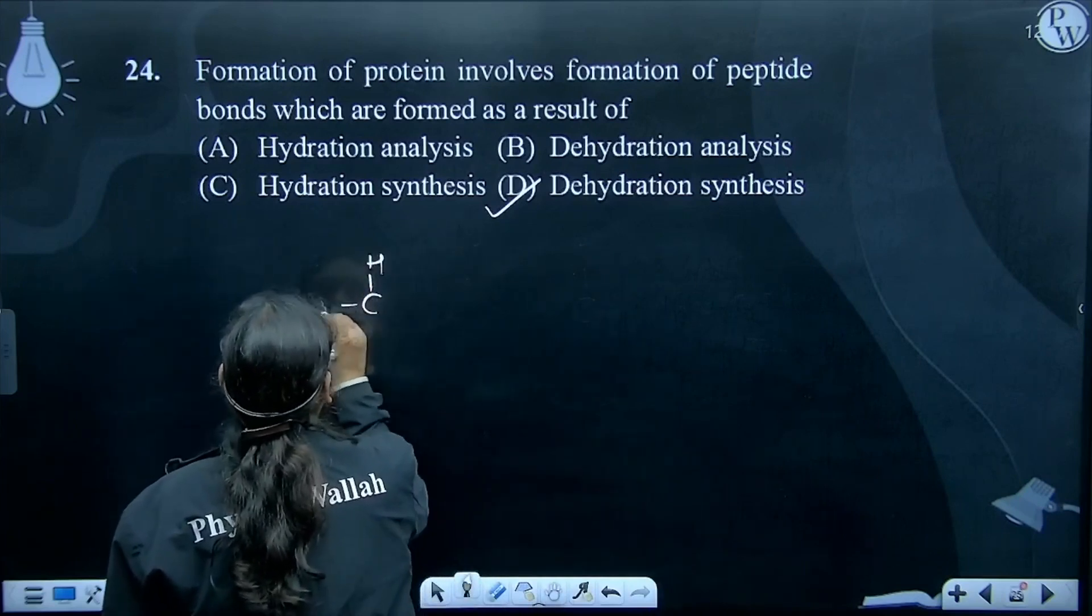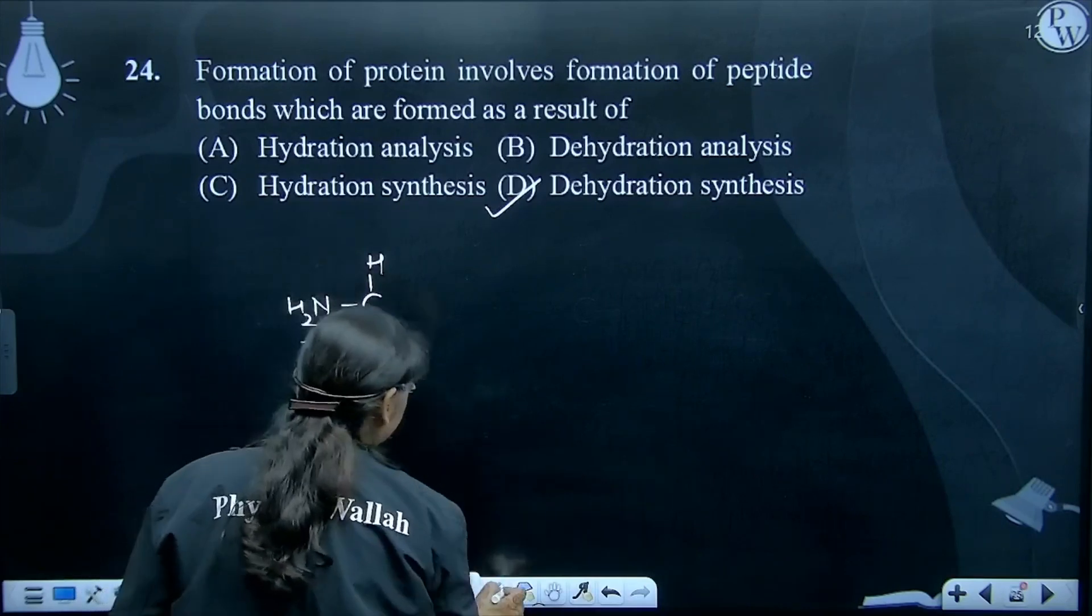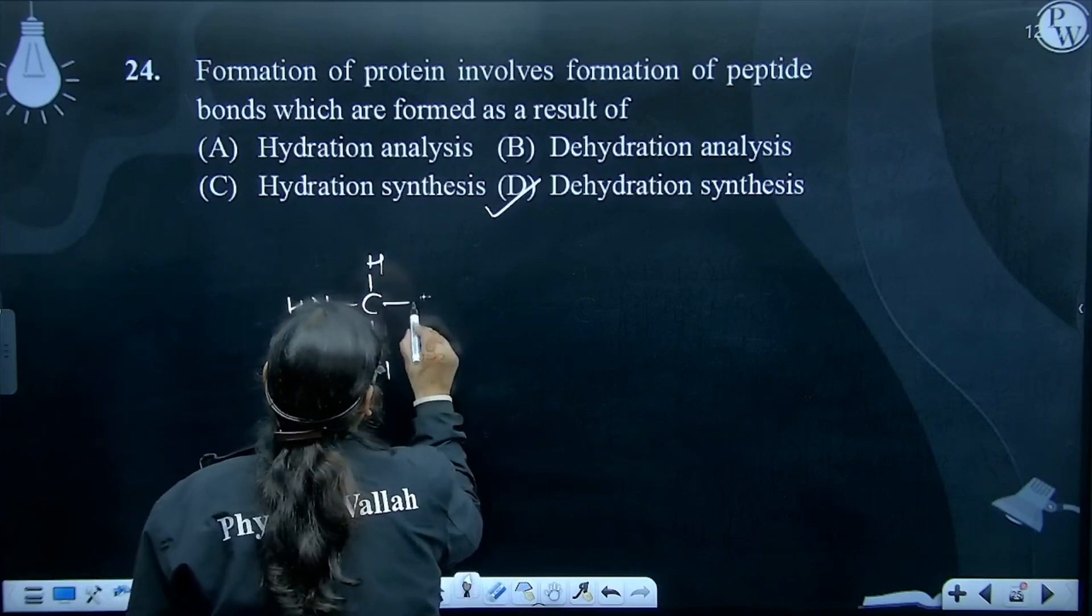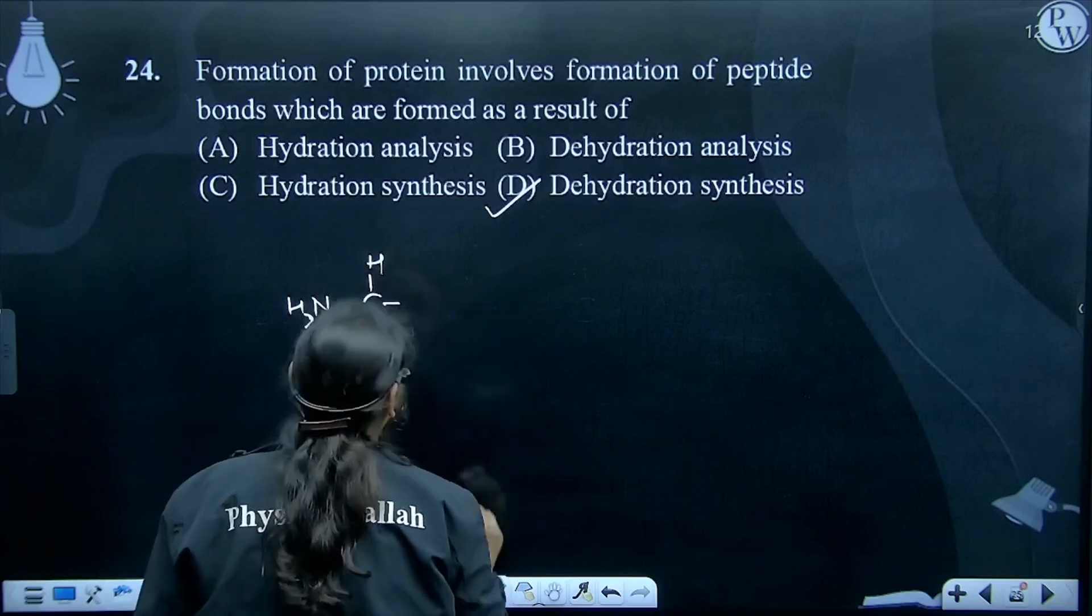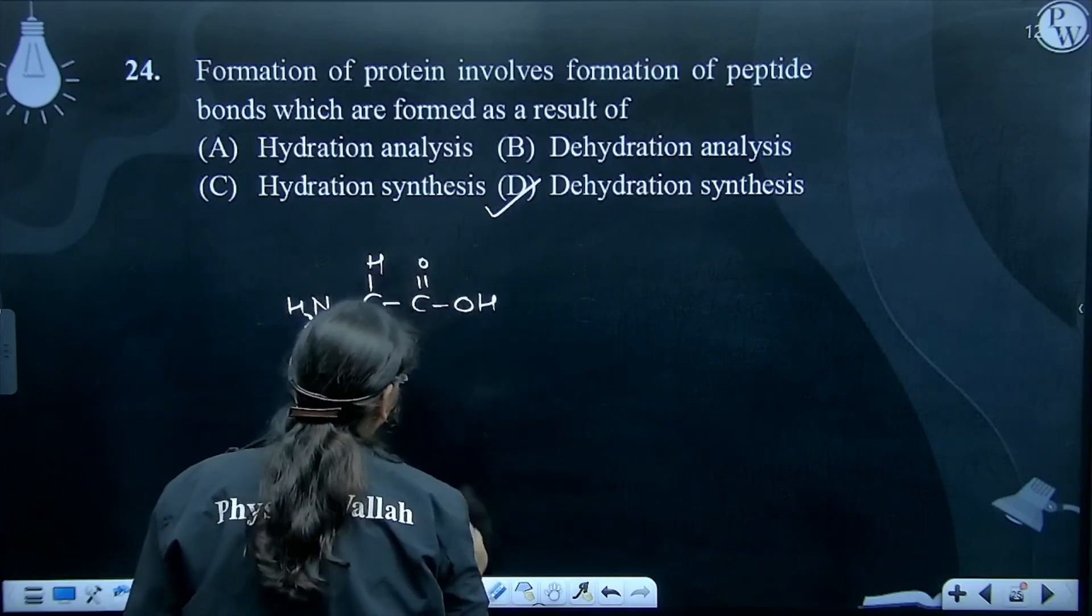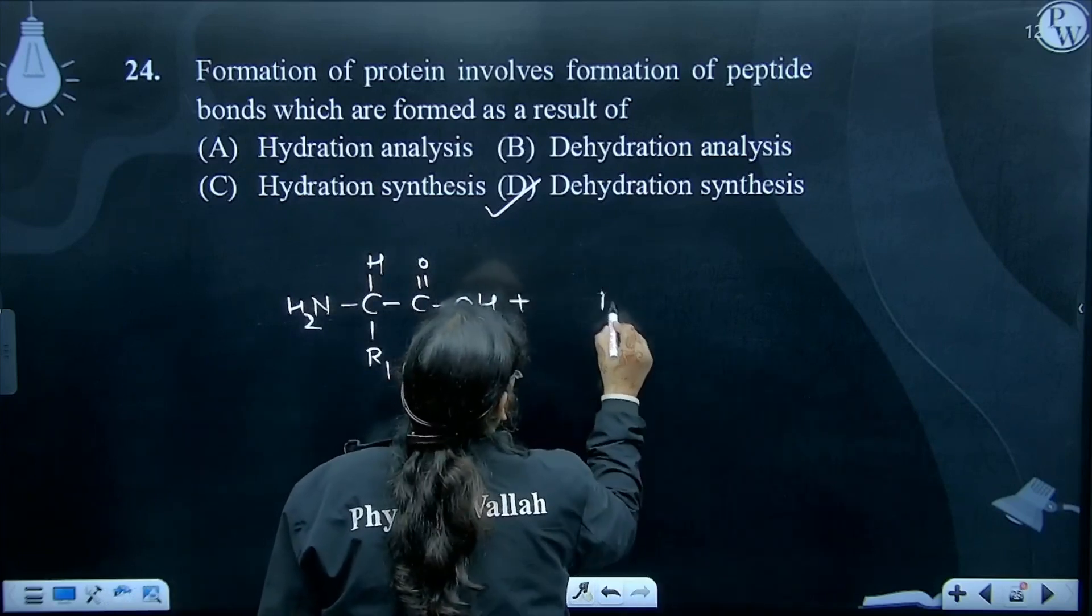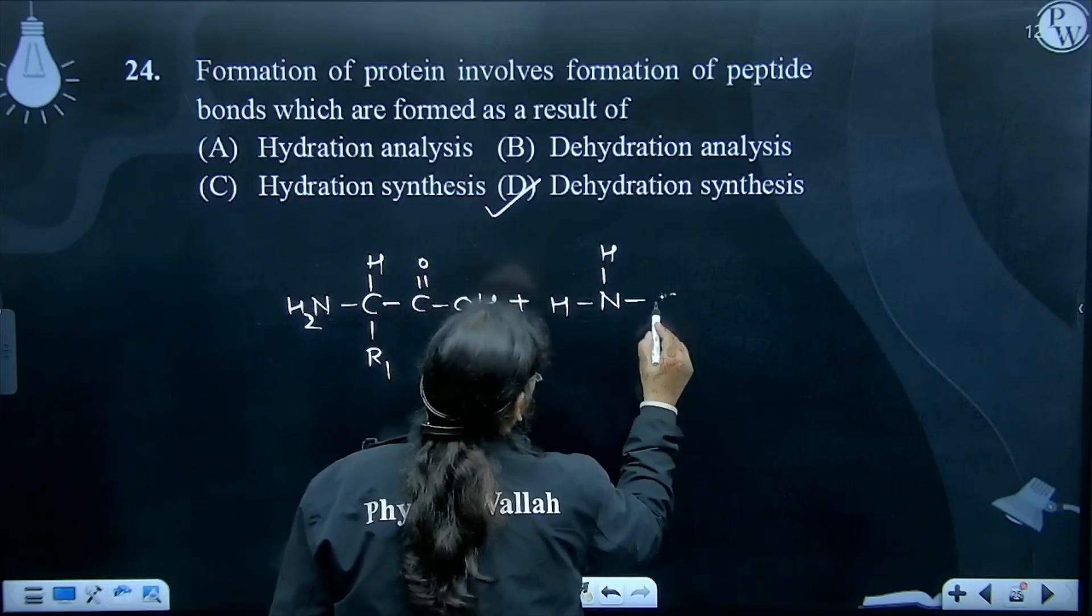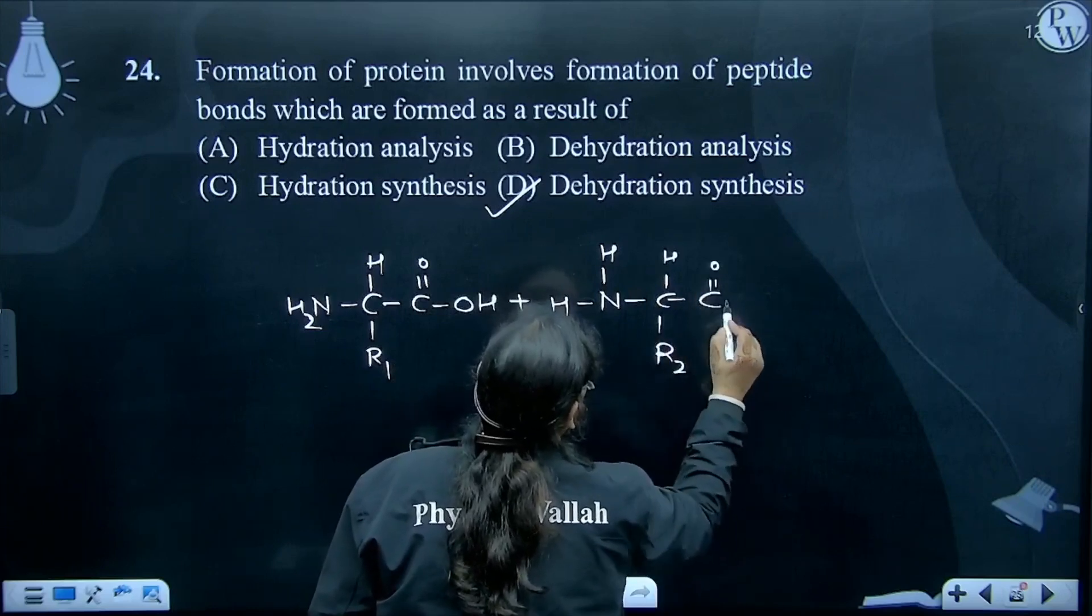It is CH-NH2 and it is R1 and it is CH-NH2. So we will make it properly, C double bond O-OH, okay na. Abh hum fit se isi taray se likh deethe hai, dousra wala bhi. Plus, it is NH and it is H, got it or not. And it is CH, it is R2 and it is C double bond O-OH.